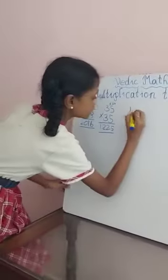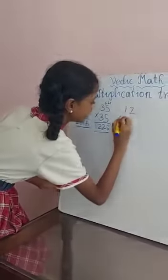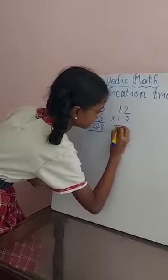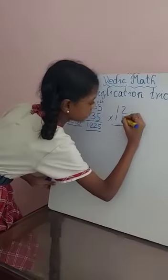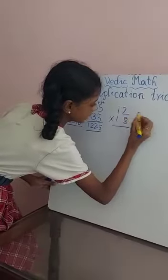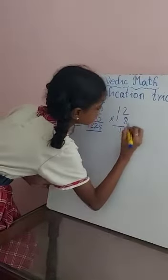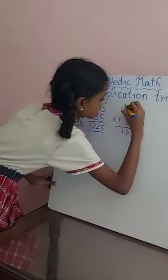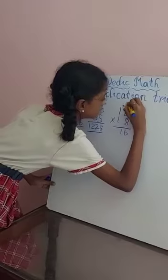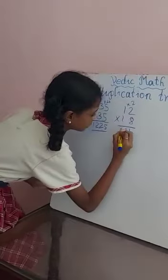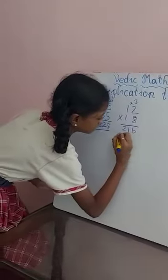12 into 18. 2 plus 8 is equal to 10. 2 into 8 is 16. Successor of 1 is 2. 1 times 2 is 2. This is the answer: 216.